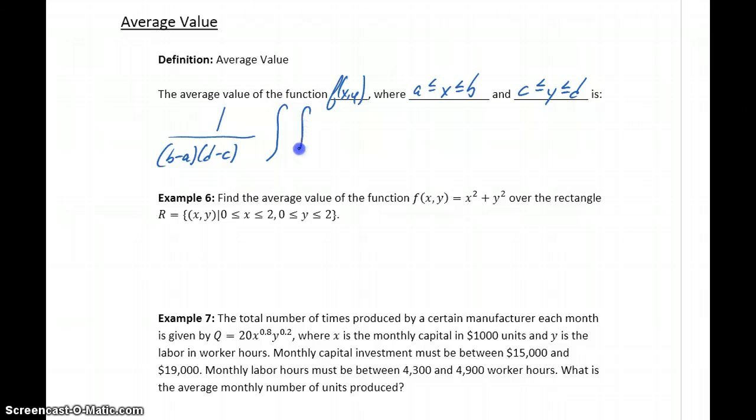Then we have the double integral of f(x,y), which we integrate with respect to x first, then y. If we integrate with respect to x, the interior integral would be from a to b, and the outer integral would be from c to d.